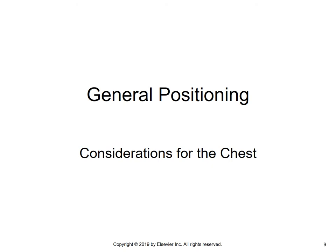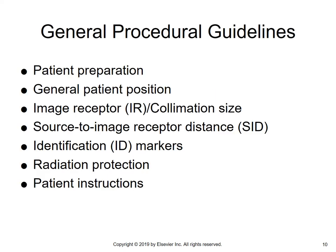Let's move on to general positioning and considerations of the chest. Some procedural guidelines: we'll talk about patient preparation, patient position, the IR size, the SID, ID markers and where they're placed, radiation protection, and then specific instructions given to the patient.